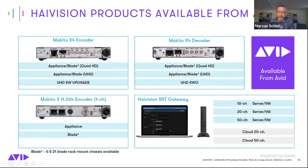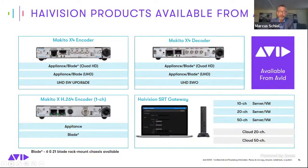The Makito X4 is roughly the size of a paperback book and about two and a half pounds, making it very portable and practical to take to locations. It can also be rack-mounted for centralized deployments. The encoder is used for contribution; there are also Makito X4 decoders for taking live streams and using them live in another part of the workflow, for live monitoring or other live workflow needs.